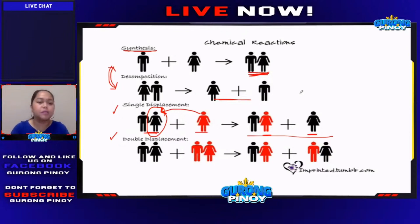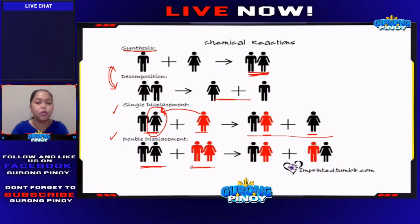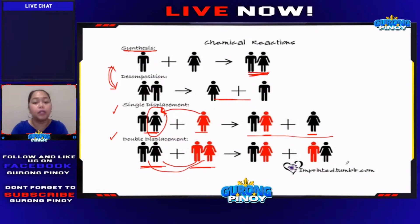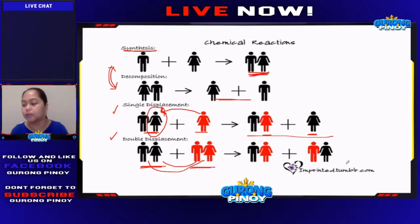For double displacement, you have two couples and they have switched partners — they've exchanged partners. So you'd call this double displacement.